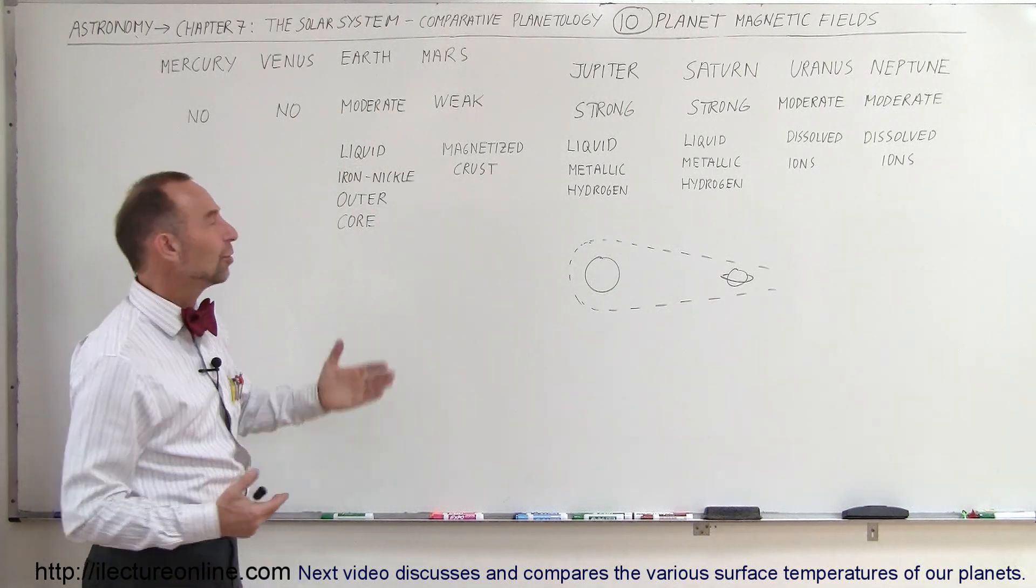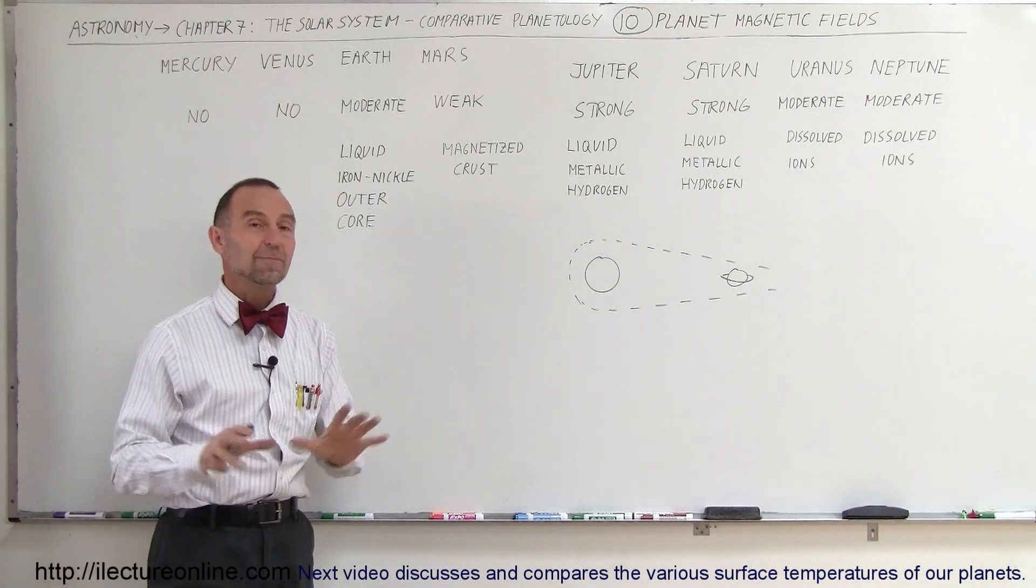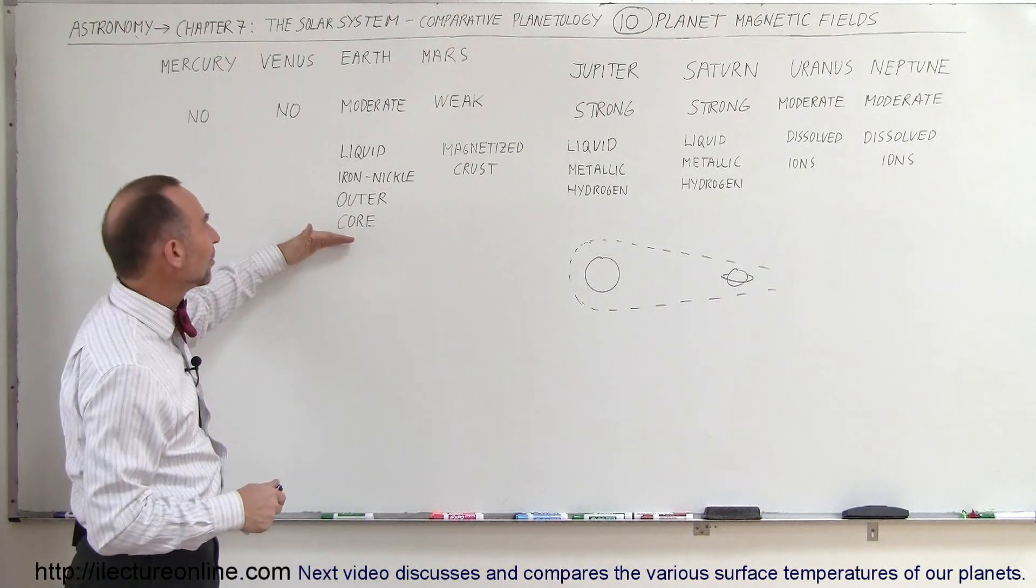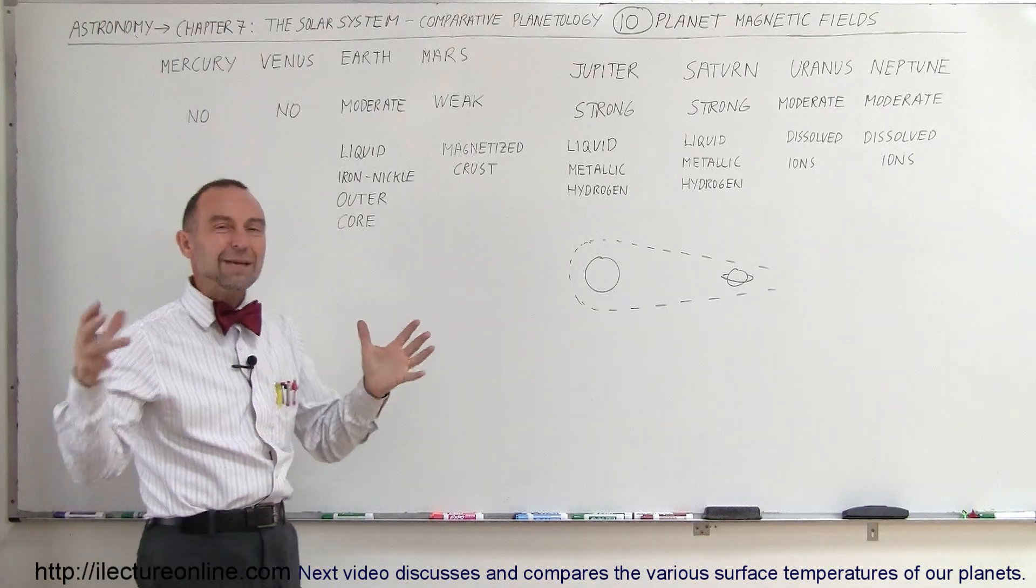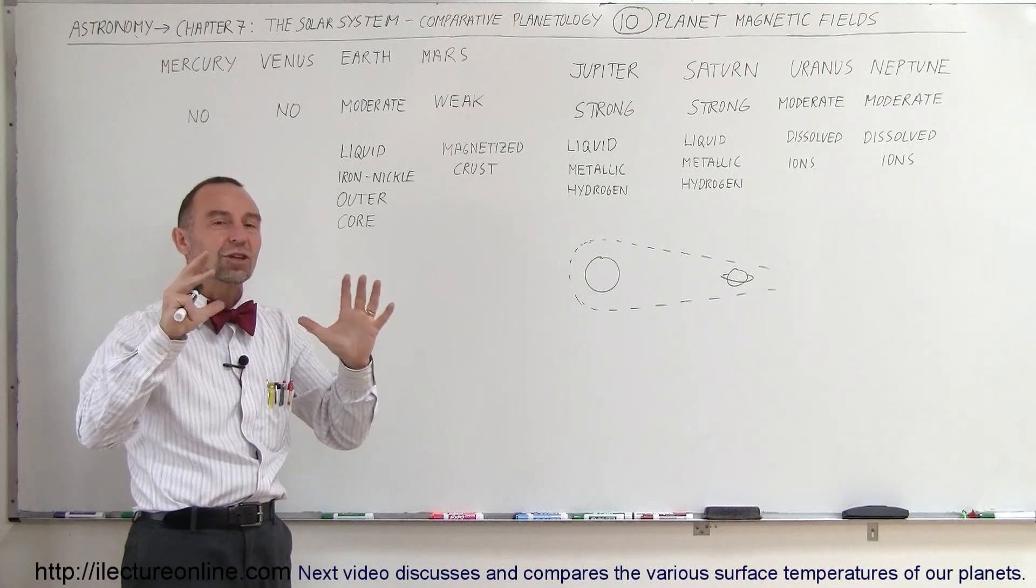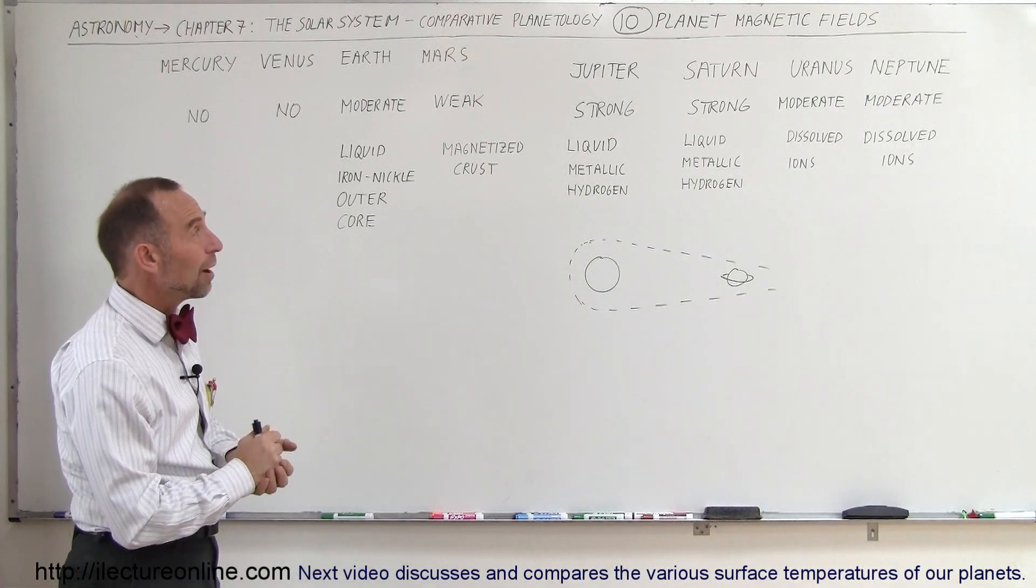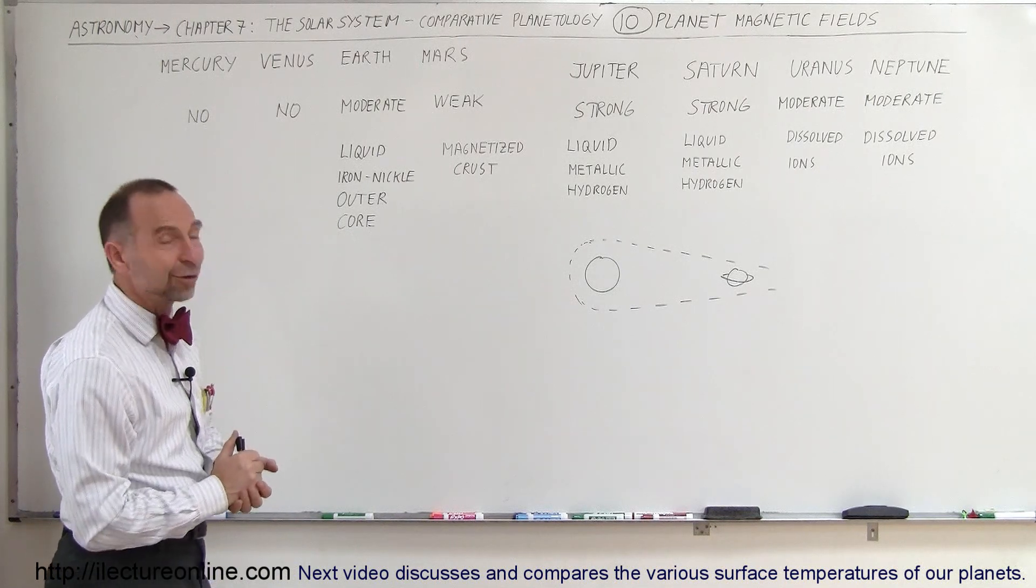Without that magnetic field, we simply could not live on the Earth because we would not be protected from the solar winds. The onslaught of those particles being sent away from the sun would impact on the Earth's surface, and the magnetic field forms a nice shield protecting us from those particles. And so that's a good overview of the magnetic fields in our solar system.